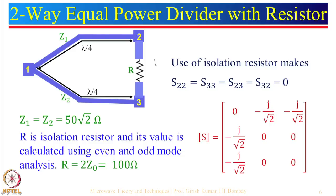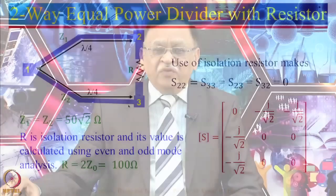By choosing this isolation resistance, we can see that S22 also becomes 0, S33 also becomes 0, and the coupling from port 2 to port 3 is 0, meaning the isolation between ports 2 and 3 is very good. We also discussed using it as a power combiner — if we put 1 watt here and 1 watt here, you have to ensure the two input powers have equal phase.